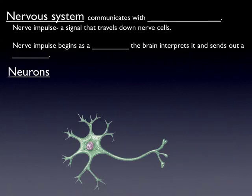Yesterday we talked about the general overview of the nervous system — the organs, the brain, the spinal cord, the nerves, and what they do. Today we're going to focus in a little bit and talk about the actual cells that make up our nervous system.